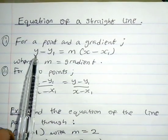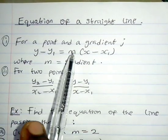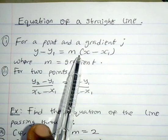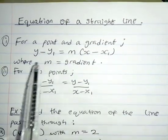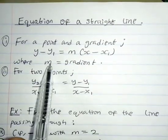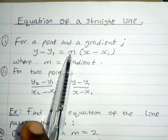For a point and the gradient, the equation of a straight line formula is given by y minus y1 equals m times x minus x1, where m is called the gradient.